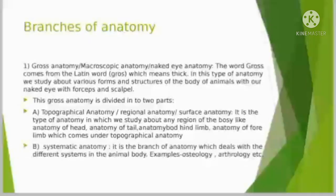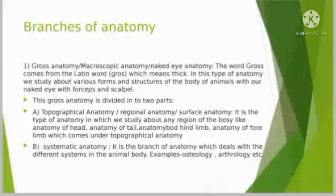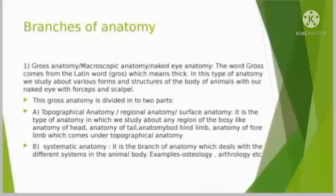The first part is topographical anatomy, also known as regional anatomy or surface anatomy. In this type of anatomy, we study the different regions of the body — such as the anatomy of the head, anatomy of the tail, anatomy of the forelimb, and anatomy of the hind limb. All of these fall within topographical anatomy.